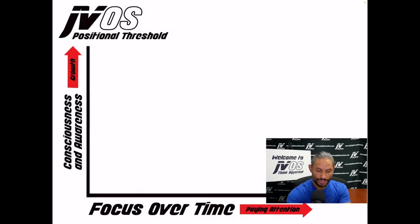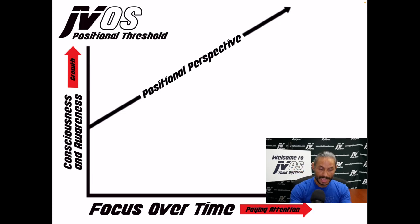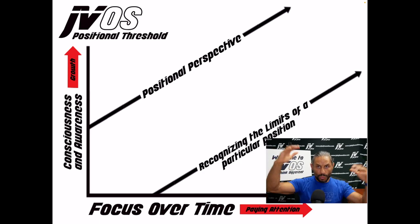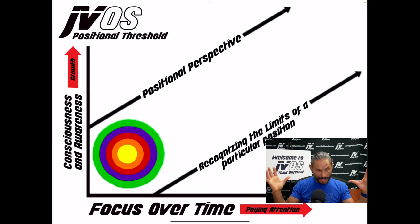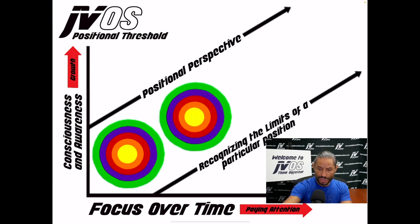We are focusing from the corner outward as a positional perspective, recognizing the limits of a particular position. With positional perspective, we started with the yellow arrow, went to the orange, the red, the purple, and the green — growing our consciousness. Once we've grown our consciousness from a particular positional perspective, we've reached our threshold. And it doesn't change. For many years I've studied these positions and there's only so much you can do — this is what represents positional threshold.